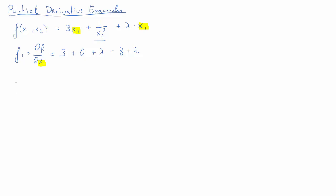So altogether the first partial derivative f1 is 3 plus lambda. We will do the same trick with the partial derivative f2, or the partial derivative with respect to x2.